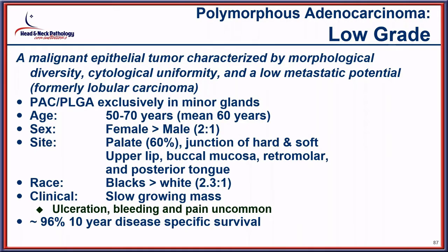This is polymorphous adenocarcinoma, recently separated into two types: low-grade and cribriform adenocarcinoma of tongue and minor salivary glands (CAMSG). For low-grade polymorphous adenocarcinoma (PLGA), the tumor was described many decades ago as morphologically similar to lobular carcinoma of breast. It is exclusively of minor salivary glands, slightly more common in women, tends to involve the palate, and is a slow-growing lesion with 96% ten-year disease-specific survival, making the low-grade terminology quite appropriate.